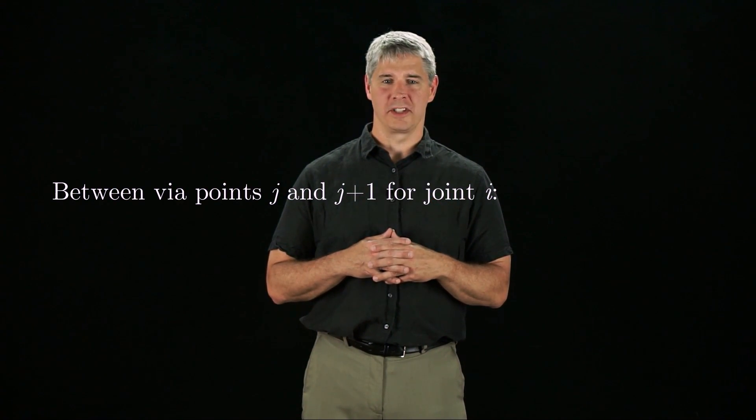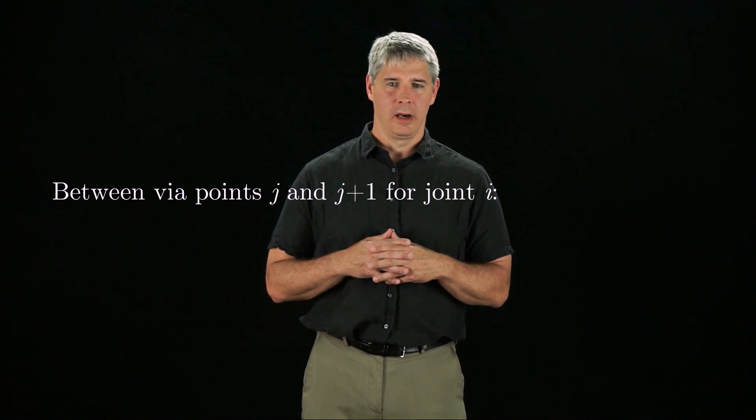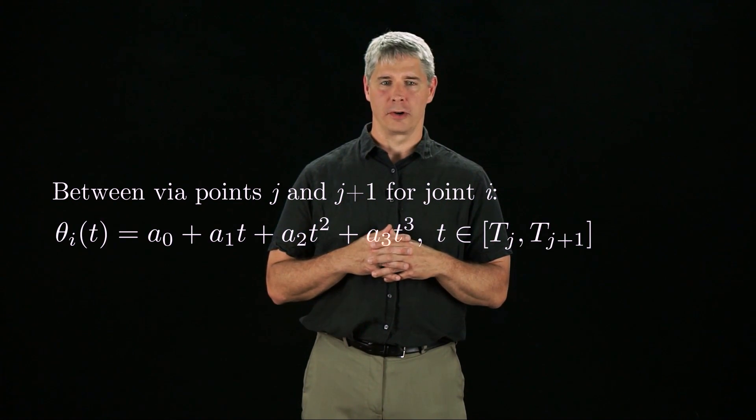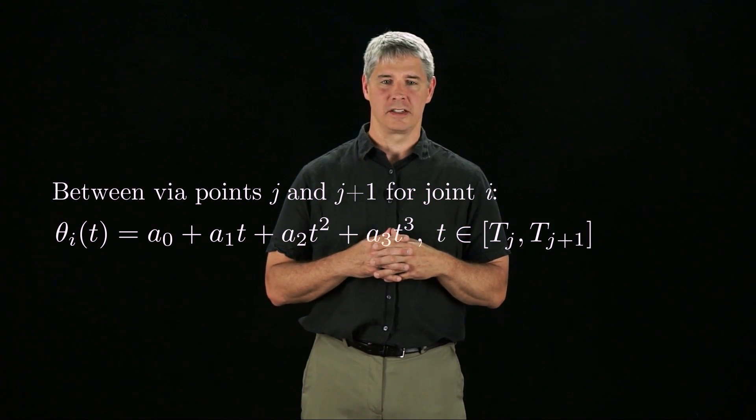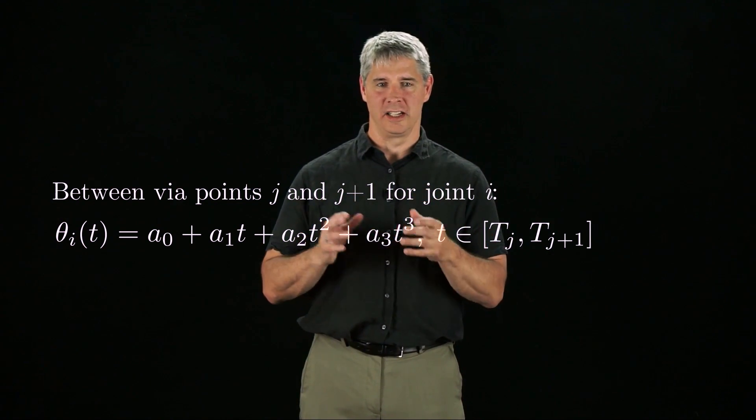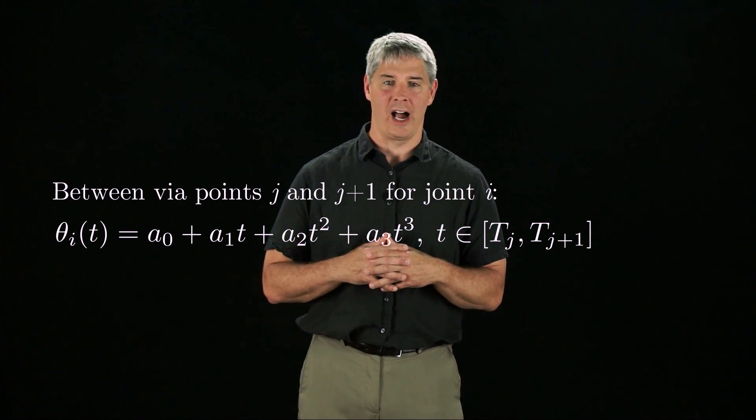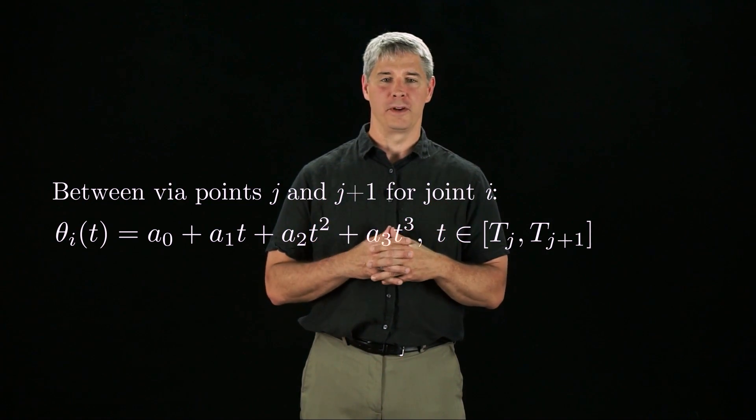Let's consider motion in an n-dimensional joint space. For joint i, moving between via points j and j plus 1, we can define the motion as a third-order polynomial of time. We then apply four terminal constraints—the initial and final position and the initial and final velocity of joint i—to solve for the four coefficients of the polynomial.